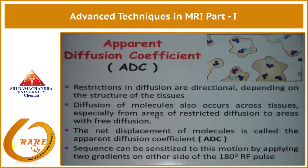Please understand that the net displacement of molecules is what is called the Apparent Diffusion Coefficient. So if diffusion is freely occurring, the displacement of molecules will happen, and if we quantify that, it is called the Apparent Diffusion Coefficient.